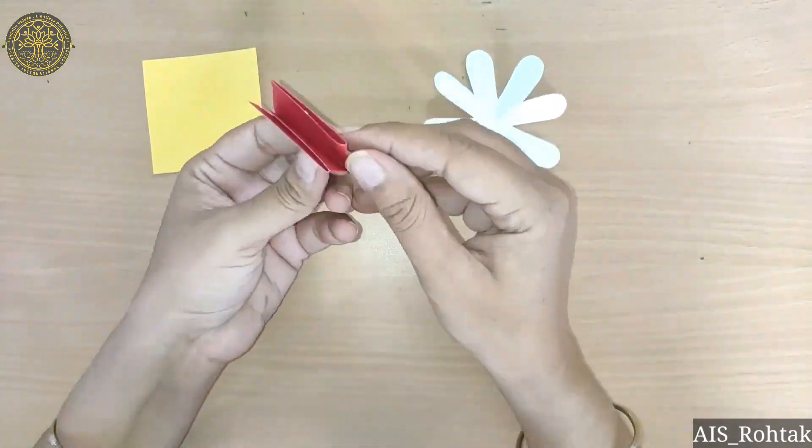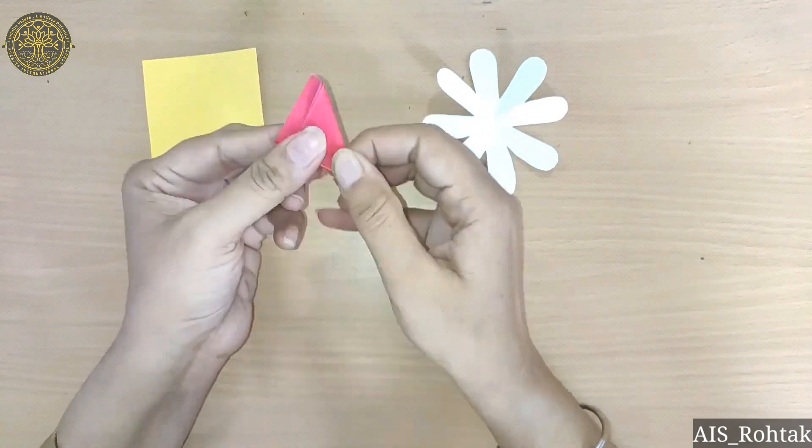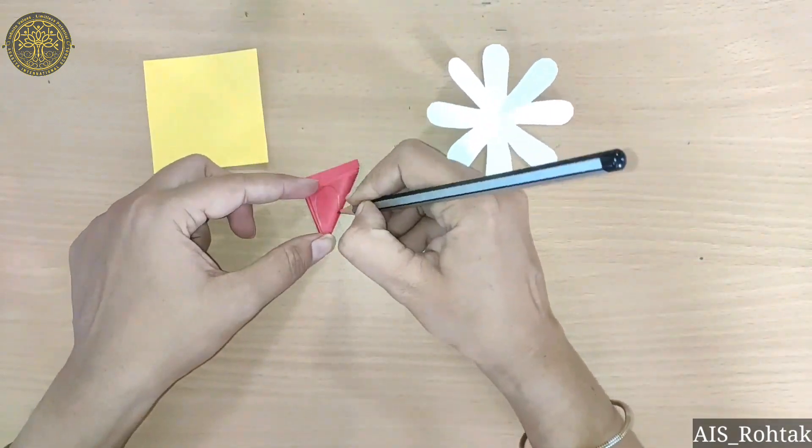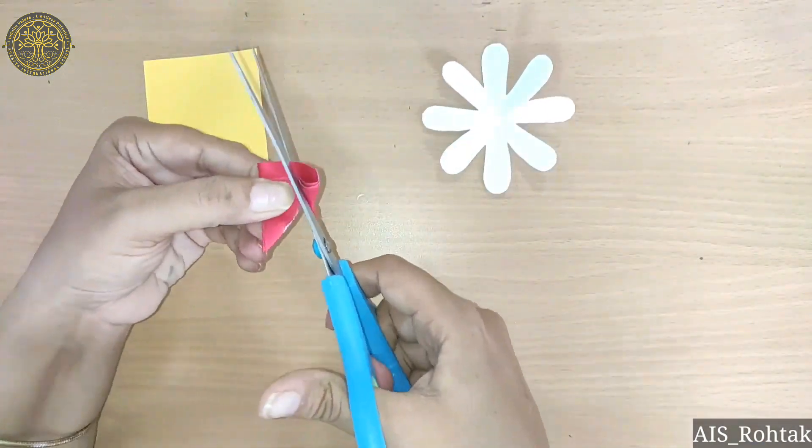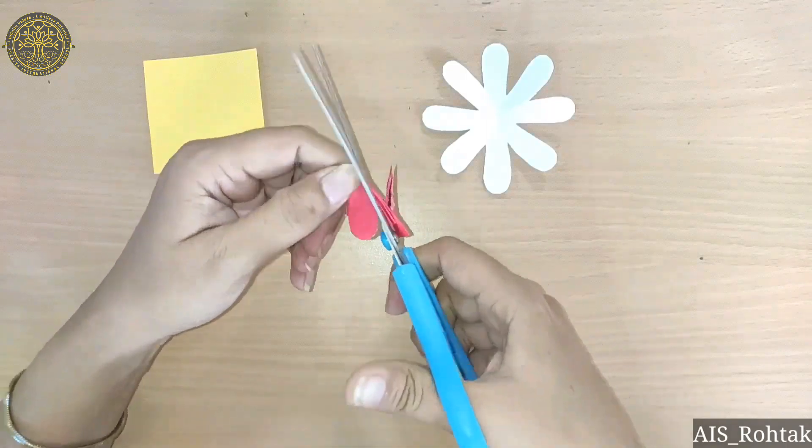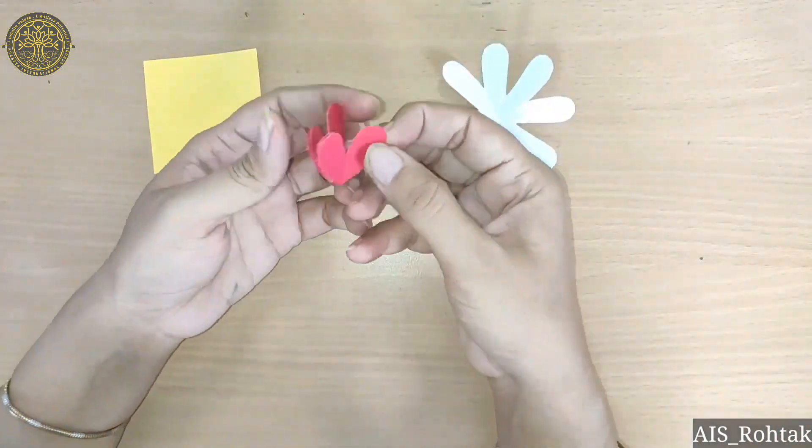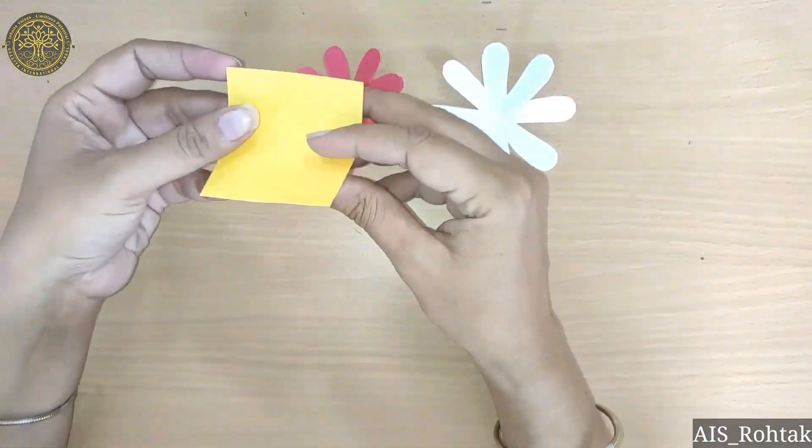Then we will fold it in the center, draw a petal and then we will cut it. And this one is smaller than the white.